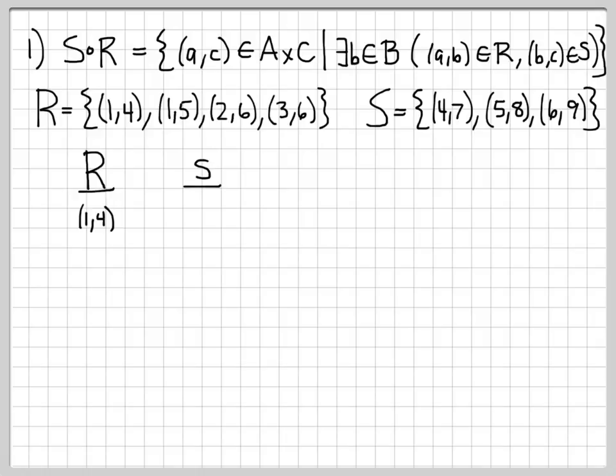One element of R is (1,4), so we start with 1 and go to 4. The question is: is there an element in S that begins with a 4? There is — the element (4,7). These interior coordinates match, so the 4s match. That's what we mean by the existence part of the definition: the second coordinate of (a,b) and the first coordinate of (b,c) must match. So the outer coordinates, 1 and 7, form the element (1,7), which is a member of S∘R.